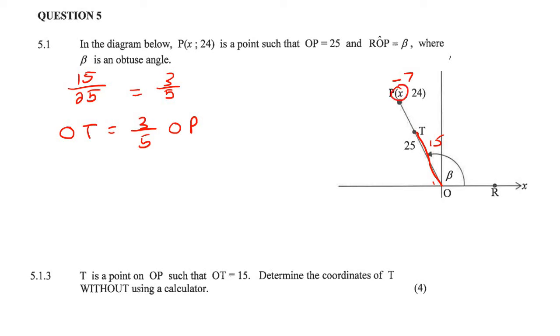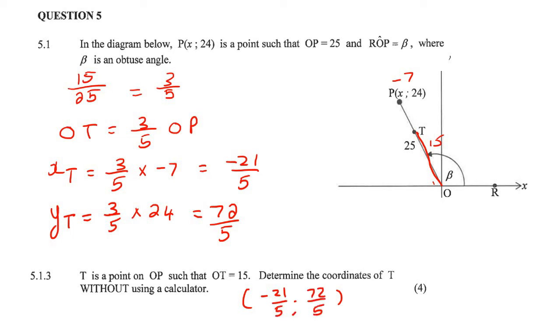So then we can just take the x value and get three-fifths of that, and then we can take this y value and just get three-fifths of that. So the x value of T will be three-fifths of this x value, which is times by minus 7, and that's going to be negative 21 over 5. And then the y value of T will be three-fifths of this one's y value, which is 24. And so that's going to be 72 over 5. And so the final coordinates, or the way that you'd write the answer would be the x value, negative 21 over 5, and then the y value, 72 over 5.